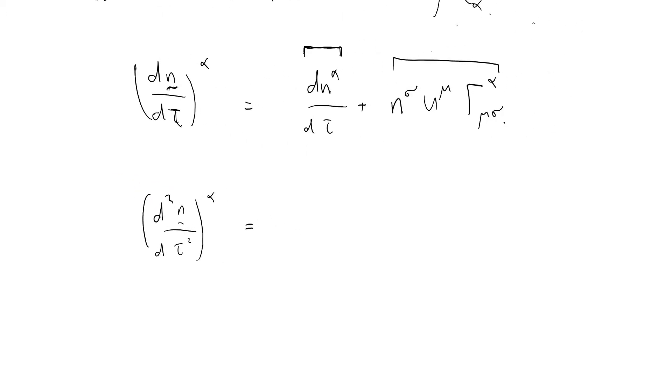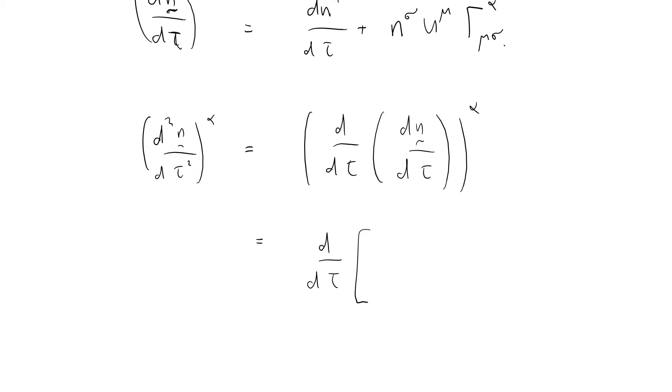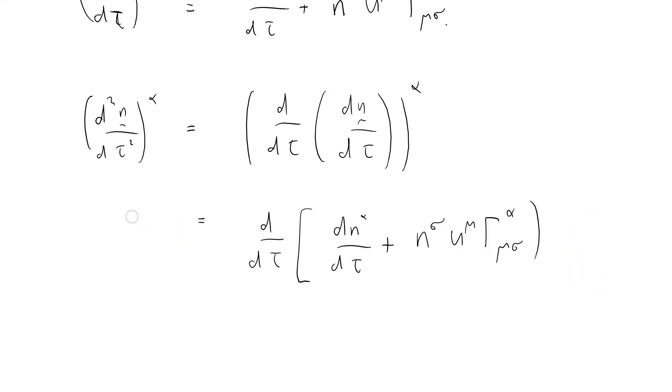Okay, so what have I got? Well, that's equal to d by d tau of d n by d tau component alpha, which equals d by d tau of this term here. That should be a square bracket.